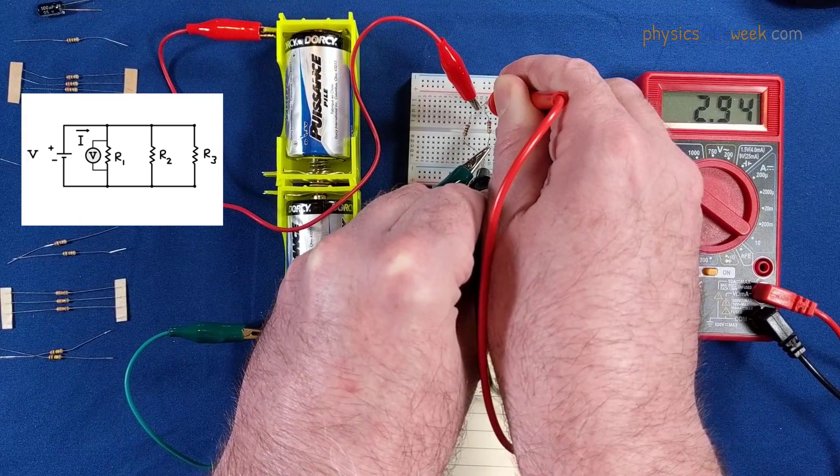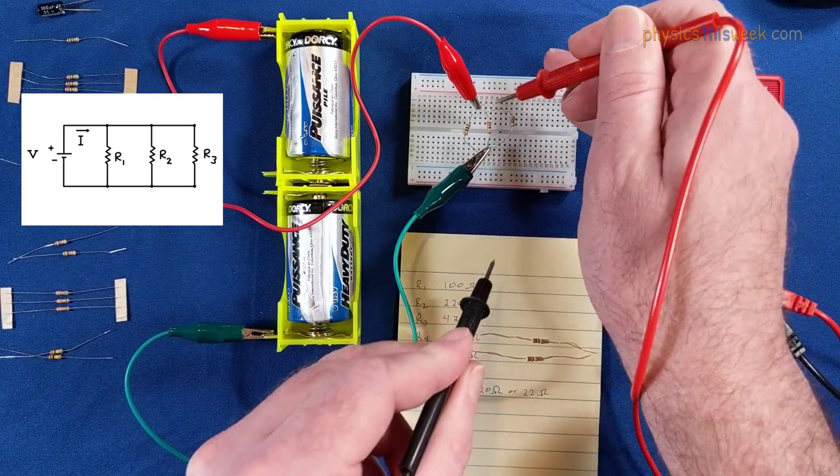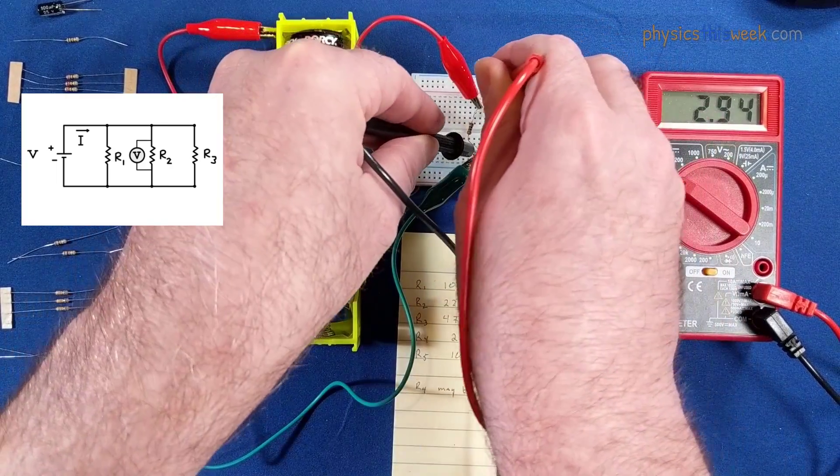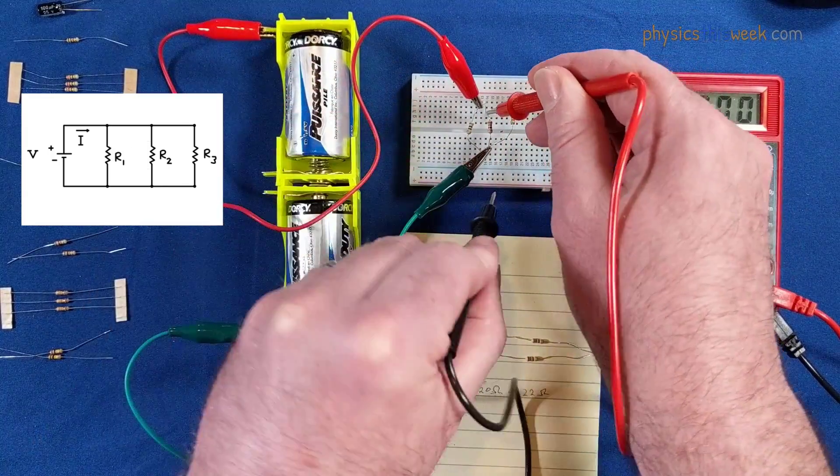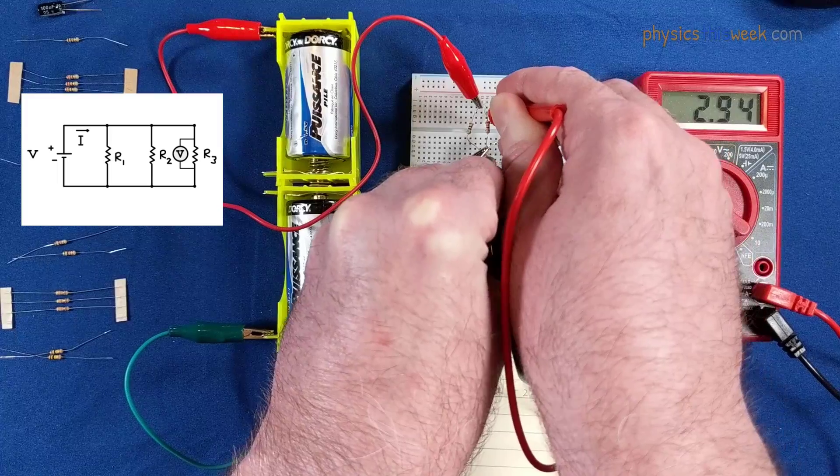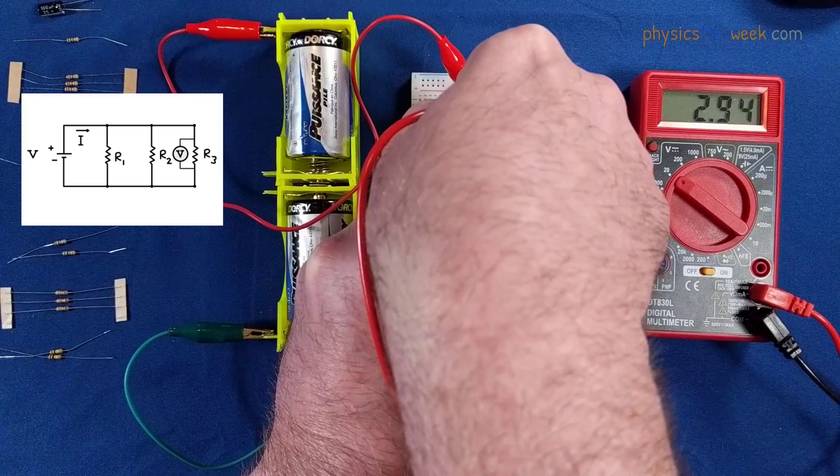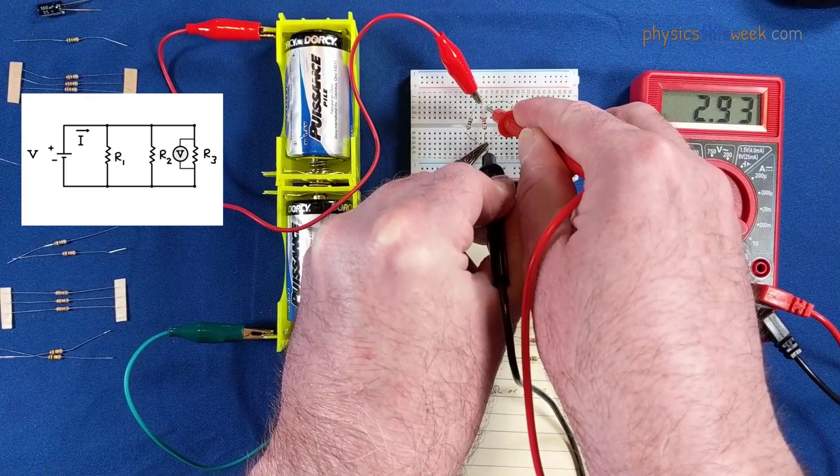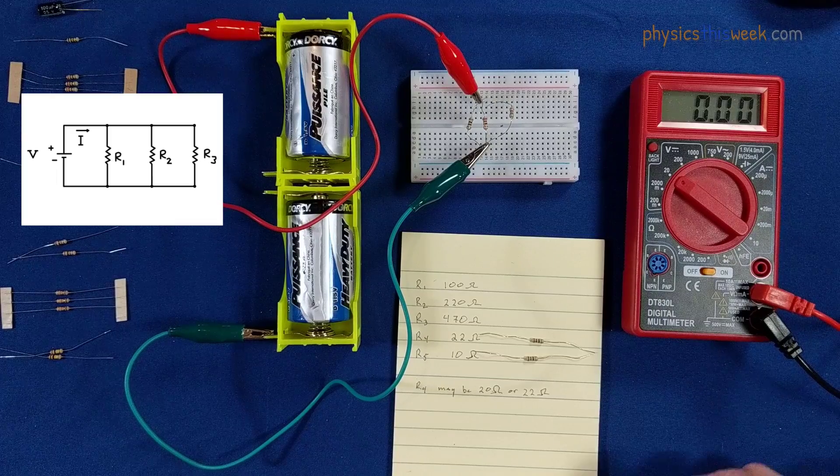2.94 volts. If I go to resistor two, 2.94 volts. And resistor three, 2.94 volts. Let me get my wrists out of the way there so you can see the settings on the voltmeter, and then move them this way so you can see that I am connected in the right spots. So those are the voltages for the parallel circuit.